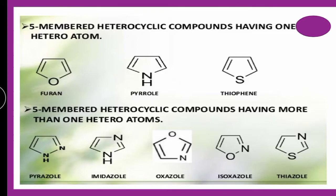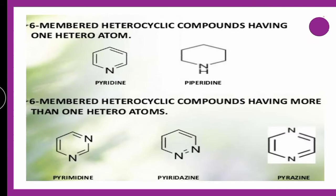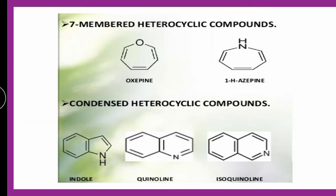Looking at the structures: furan contains only 1 heteroatom; pyrazole contains more than 1 heteroatom of the same type; oxazole contains more than 1 heteroatom but of different types. For 6-membered rings: pyridine and piperidine contain only 1 heteroatom, while pyrimidine, pyridazine, and pyrazine contain 2 heteroatoms. Oxypines (oxygen) and azepines (nitrogen) are 7-membered rings. Fused examples include indole, quinoline, and isoquinoline.